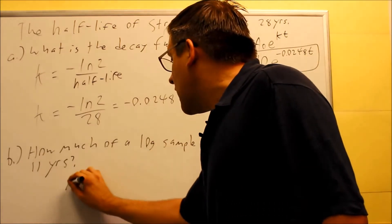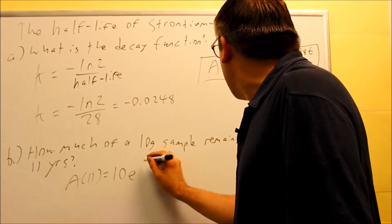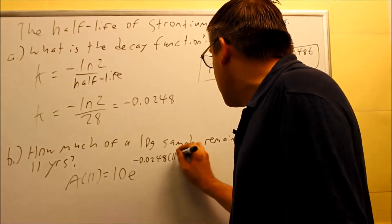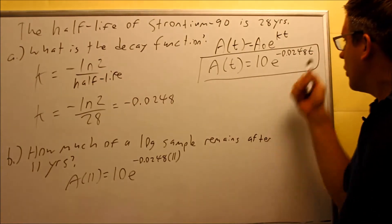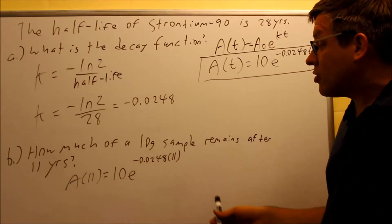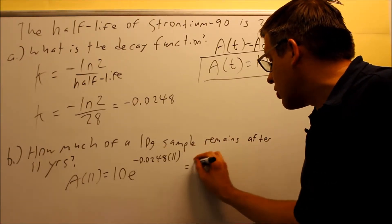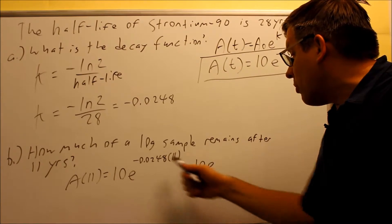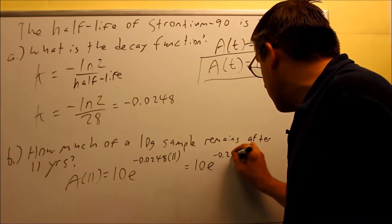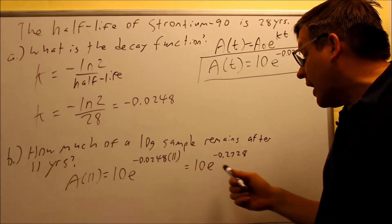So we're going to do A(11) equals 10e^(negative 0.0248), and put in 11 for the t value. If you have a certain amount of years they want to figure out, they want to ask you how much is there after 11 years, you work with the exponent part first. So we're going to do 10e, we're going to multiply that together, and if you multiply that together, you're going to get negative 0.2728 when you multiply that out.